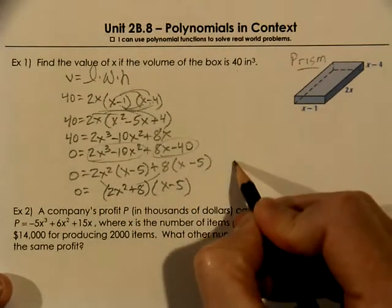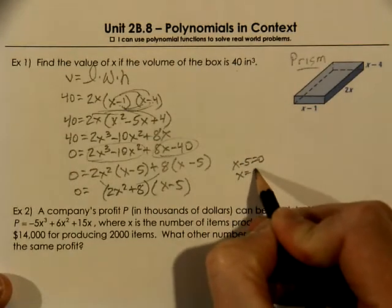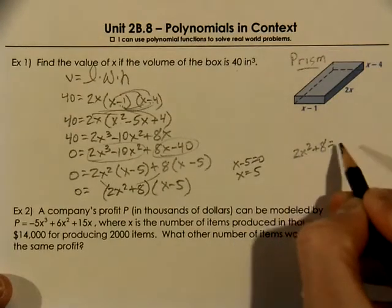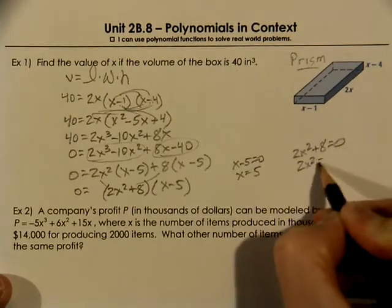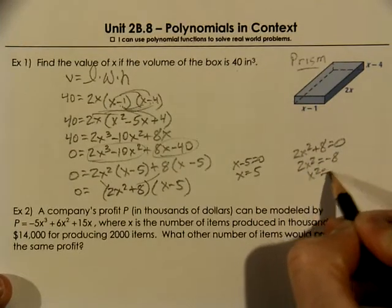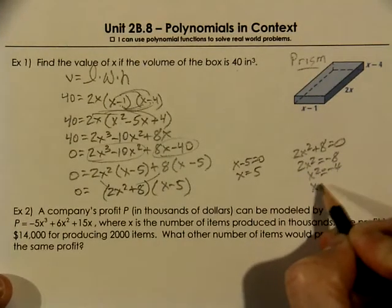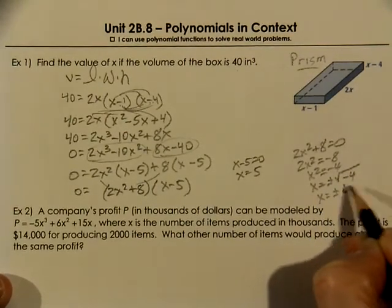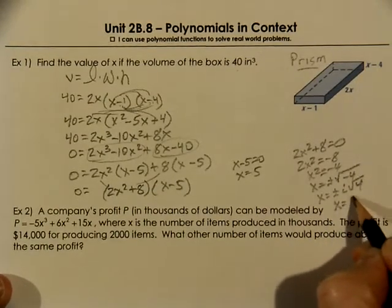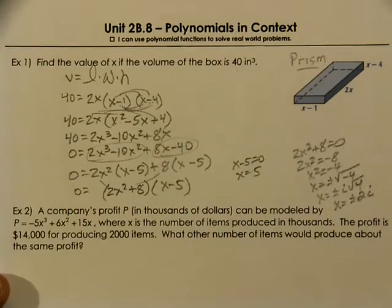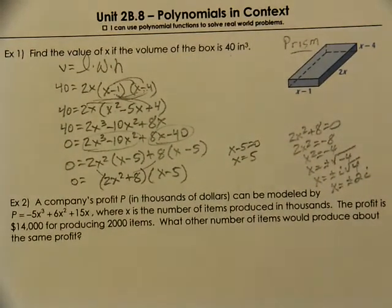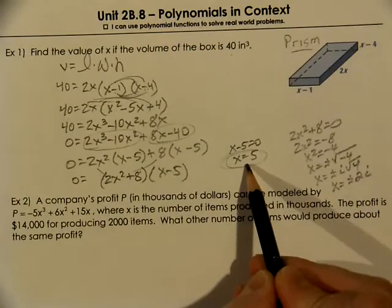Now since it equals 0, we can use our 0 product property to set it equal to 0. And when we go through to solve this, we see that we would get plus or minus 2i. Well, that is an imaginary answer. So we only have one real answer. The value of x would have to be 5.